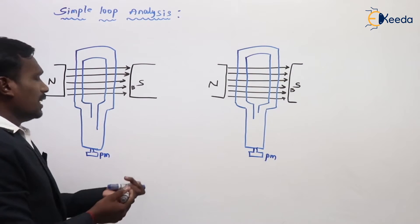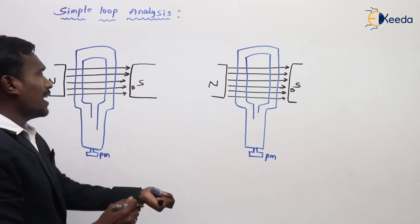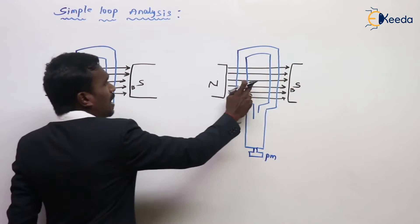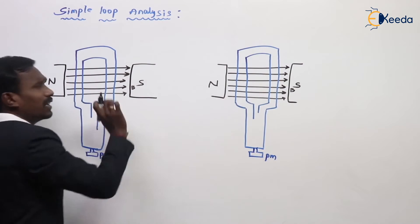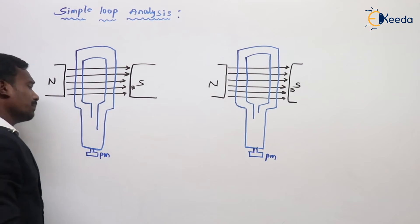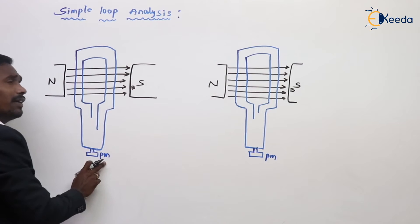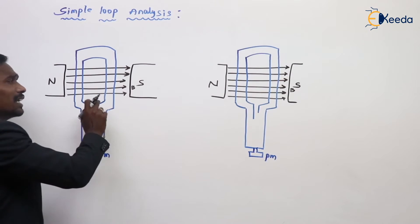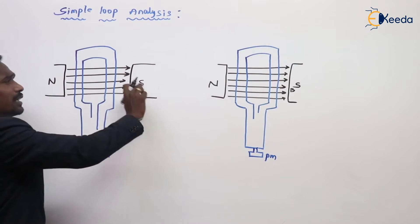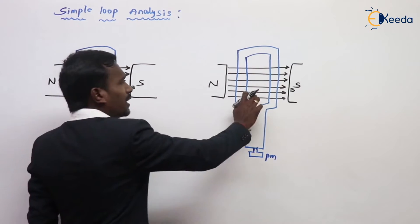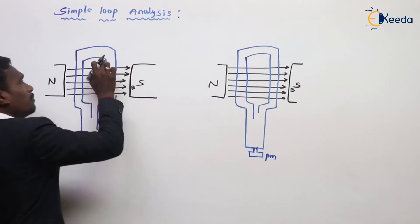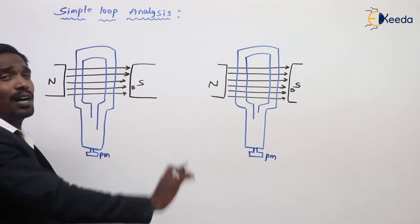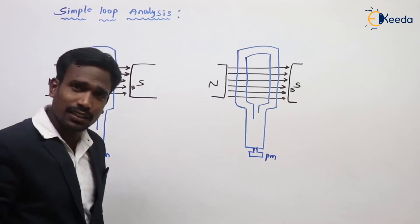In general, the EMF is induced in this armature coil when prime mover input is given — when this rotating conductor is placed in a magnetic field, then EMF is induced in the armature conductors.